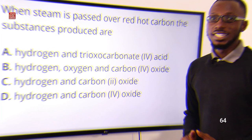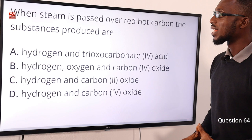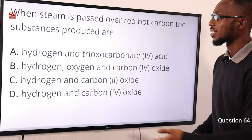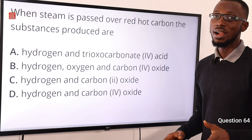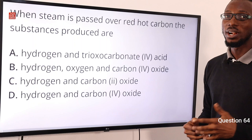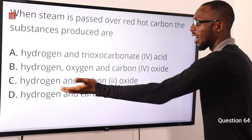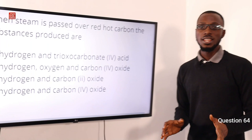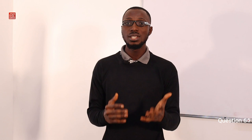Question 64: When steam is passed over red hot carbon — referring to the Bosch process at about 1200°C — the substances produced are water gas, which is a combination of hydrogen and carbon monoxide. The correct option is option C. We've come to the end of this video segment; hit like, subscribe, and tap the notification bell for the next video.